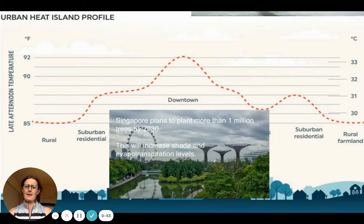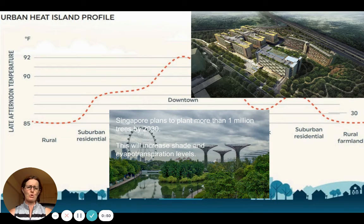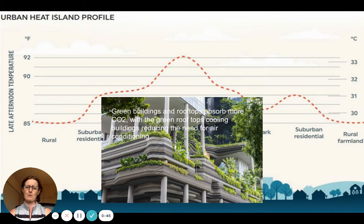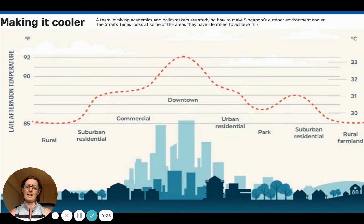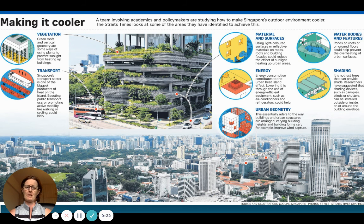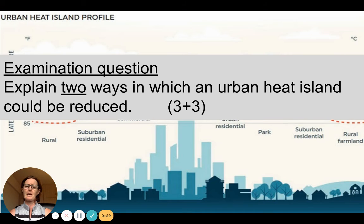To manage the urban heat island effect, we can plant more trees — as Singapore does — to increase levels of shade and evapotranspiration. Green buildings and green rooftops also help, and mean that less air conditioning is needed. Lighter-coloured buildings can reflect more incoming solar radiation. Singapore has a number of these strategies. Examination questions may ask you to explain two ways in which an urban heat island could be reduced.